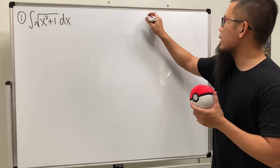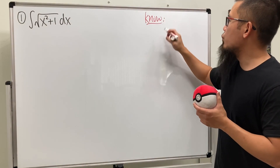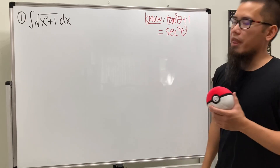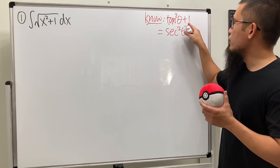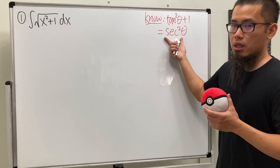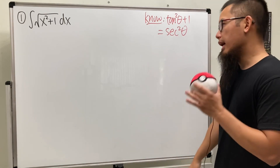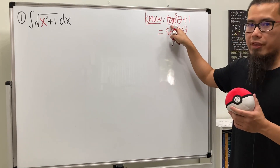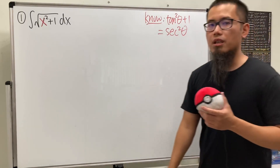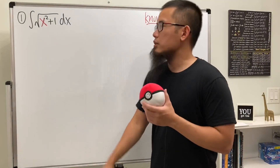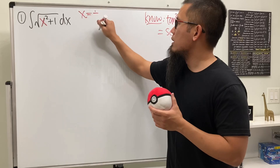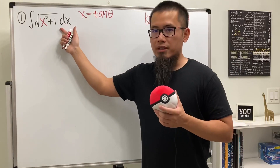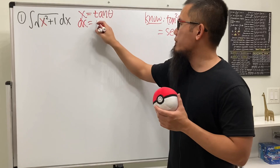The identity we want is tan²θ + 1 = sec²θ. We have a sum of two terms that gives us just one, and it's a perfect square — very nice. The idea is: wouldn't it be nice if x equals tangent theta? Then we can use this identity. So let x equal tangent theta. We still need dx, so differentiating gives us dx = sec²θ dθ.